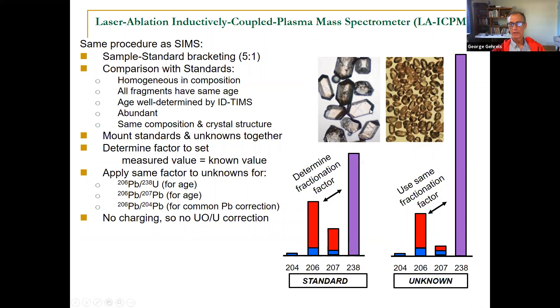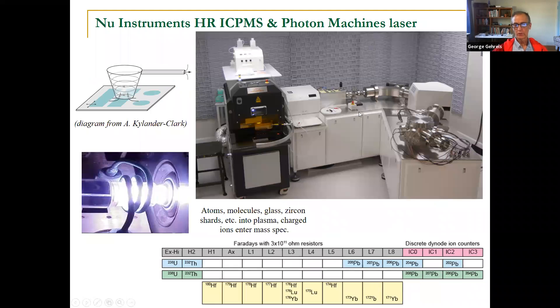Turns out laser ablation ICPMS works exactly the same. We have the same standards, the same unknowns. We do standard sample bracketing. The precision that we get is about the same, also one to 2%, something like that. And so here's the instrument that we use. This is still basically two different instruments. There's the laser on one side and the mass spectrometer over here. And the connection between the two is this tiny little Teflon tube.